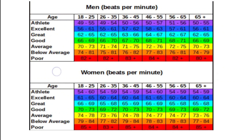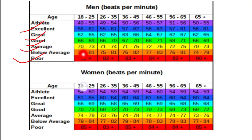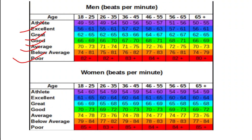This is the normal range of pulse rate for male patients. The criteria are divided by age group from 18 to 25 up to 82 and above. According to age group, the pulse rate classification includes categories such as excellent, good, average, below average, and poor, as defined in standard textbooks.